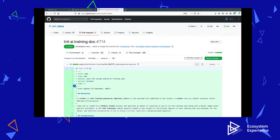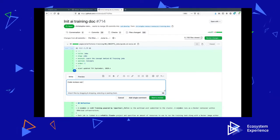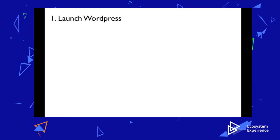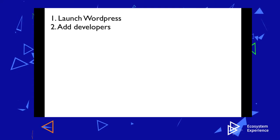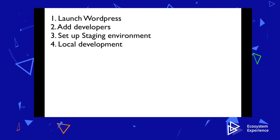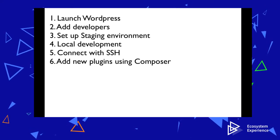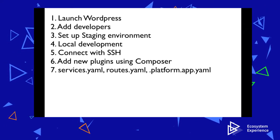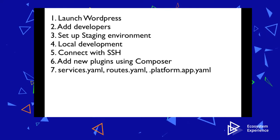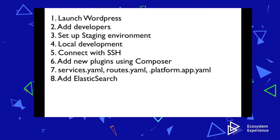The OVH Cloud is designed to work perfectly with your existing workflows with tools such as GitHub or GitLab. In this demo, I will show you launching a WordPress app from the marketplace, adding developers to the project, setting up the staging environment, setting up my local development workflow, connecting to the WordPress site with SSH, and adding new WordPress plugins using Composer. I will also show you the three files that need to be created for any project on the OVH Cloud for your application to run properly. Finally, we'll add Elasticsearch as a service to the WordPress site.